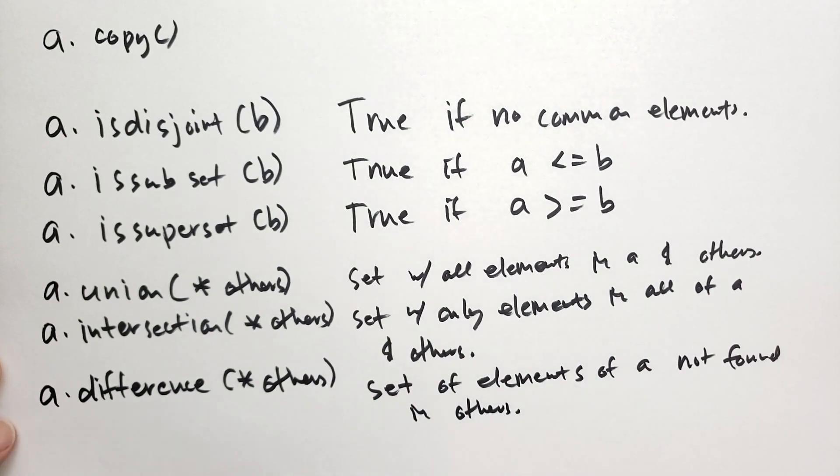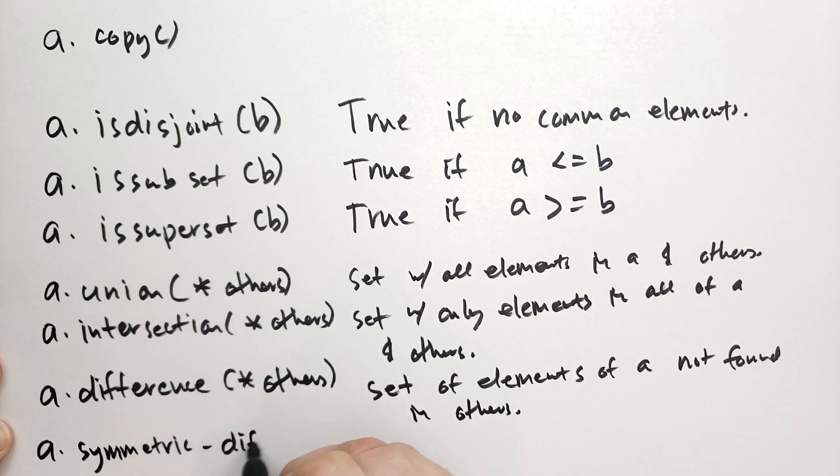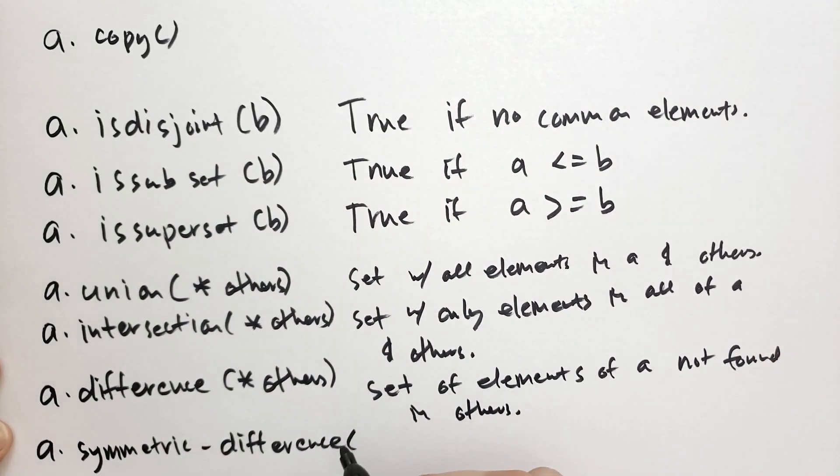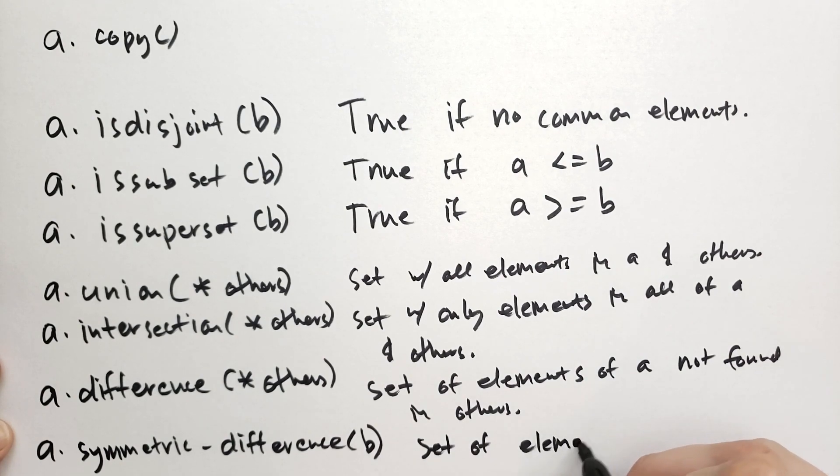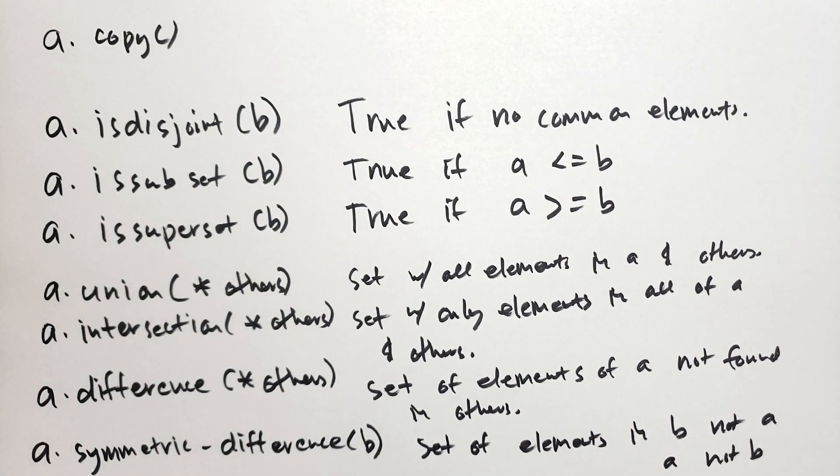And this will return a set of elements from A not found in the others. And then we have symmetric difference. And you can specify only one other set. And this will be the set of all elements and B but not A. And A not B. So the elements that are unique to A and unique to B.